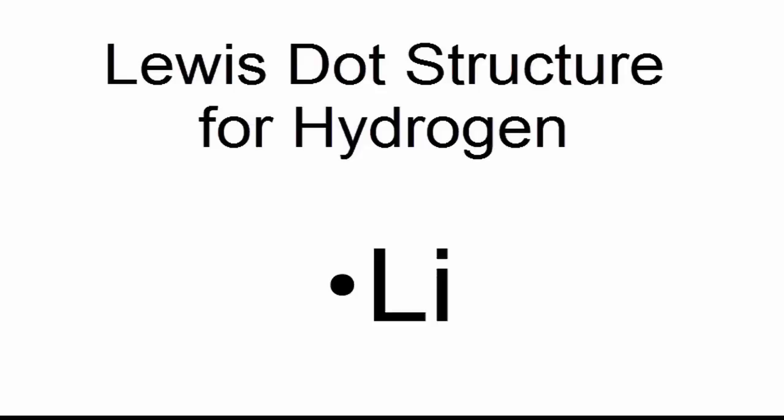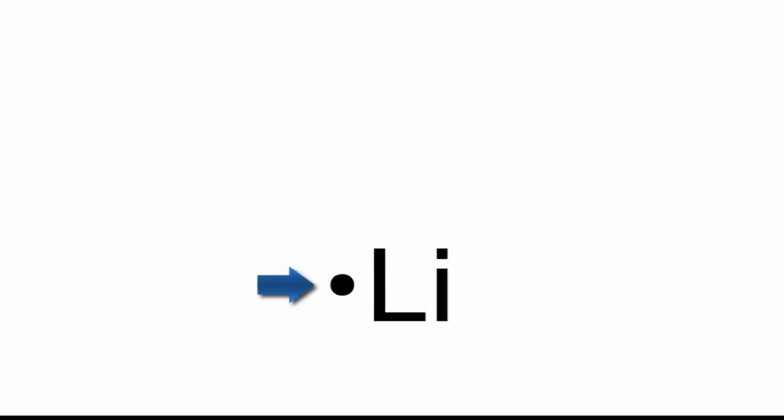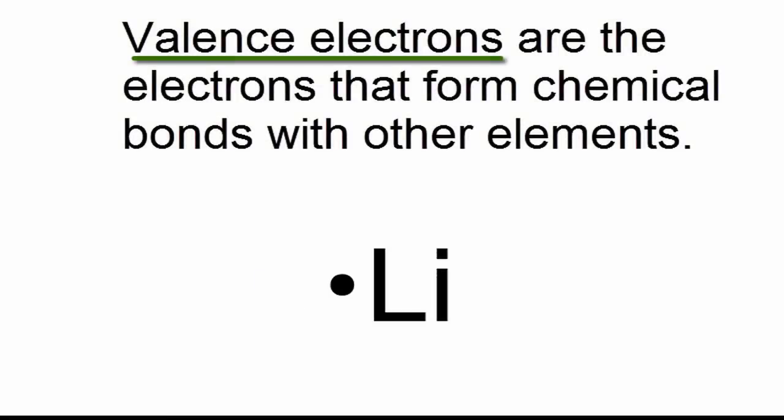Lithium only has one valence electron, so we'll put that valence electron right next to the element symbol for lithium, which is Li. Remember, valence electrons are the electrons involved in forming chemical bonds with other elements. That's why they're so important in chemistry.